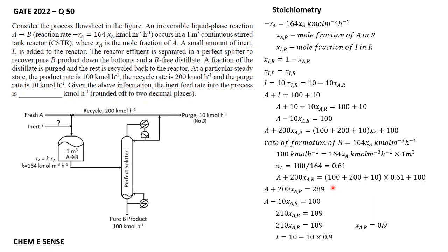Substituting xAR equals 0.9 back into the inert balance equation: I equals 10 minus 10 times 0.9, which gives I equals 1 kmol per hour. This is the answer. If you have any questions, please mention them in the comment section.